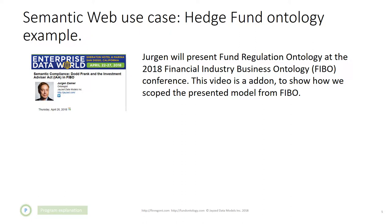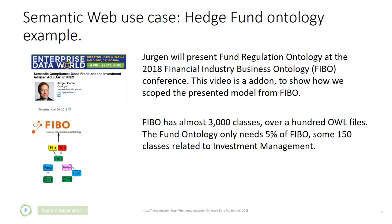Our example for today is the hedge fund and fund ontology. I will present the fund regulation ontology at the FIBO conference next month in San Diego, and this video is an add-on showing how we extracted the scoped subset model from FIBO. FIBO has almost 3,000 classes and over 100 OWL files. The fund ontology only needs about 5% of FIBO — maybe 150 classes related to investment management.